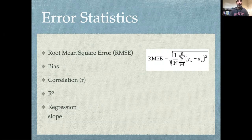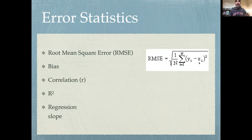Let's work through it from right to left. Error — remember, we talked about that when discussing linear models and defining residuals. Error is just the difference between what was observed and what was predicted by the model. So if error is that difference between the model and the data, squared error is that error squared — we take the error and square it.